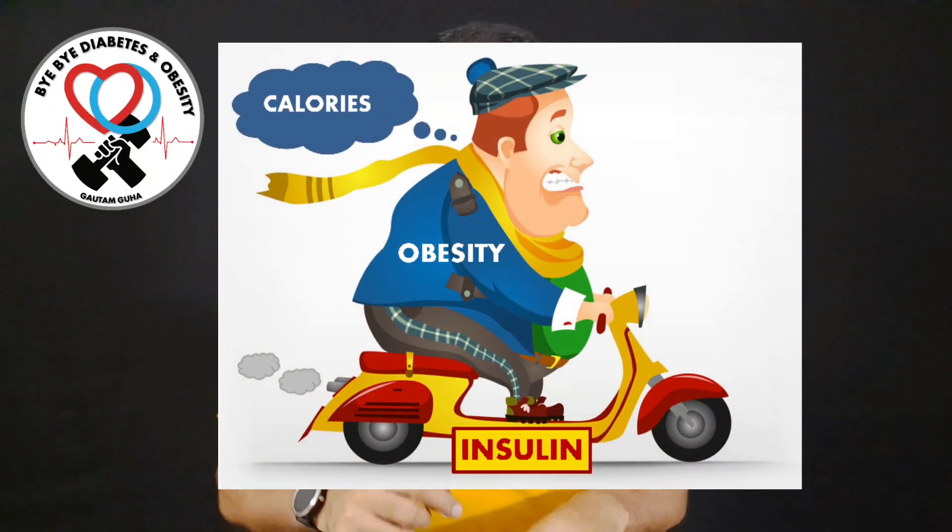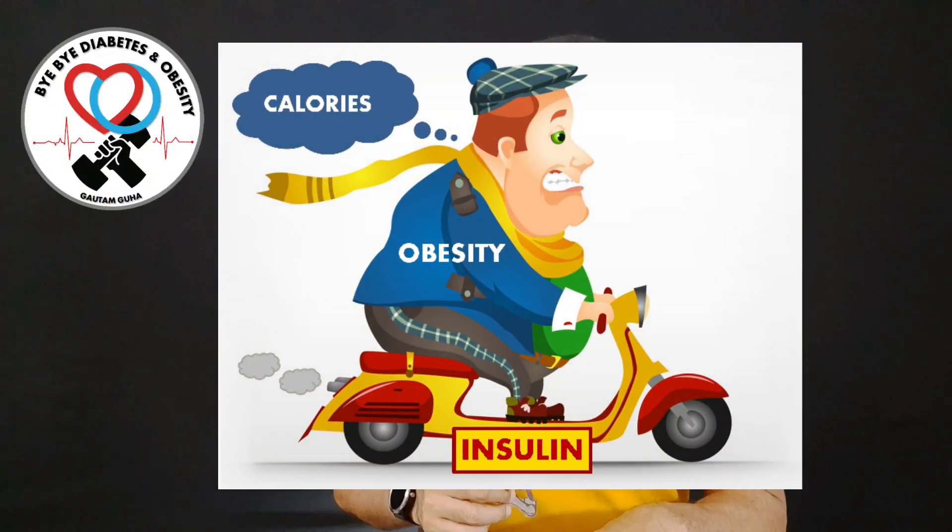Obviously, next day morning when you go to the gym and burn off 300 calories on the treadmill, the response that the body will show to your physical activity will be different when it tries to balance out the ice cream versus when it tries to balance out the salad. That's what we have to understand. Insulin is the main driver of obesity, not calories.